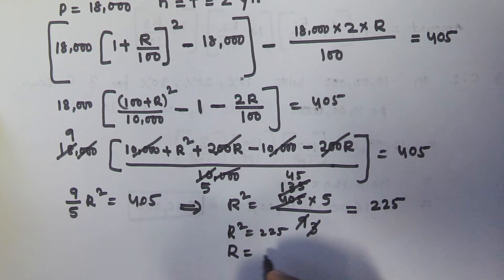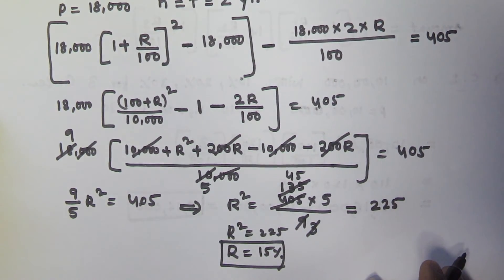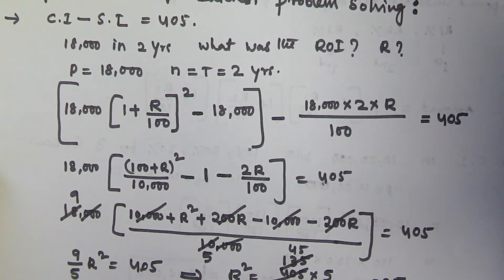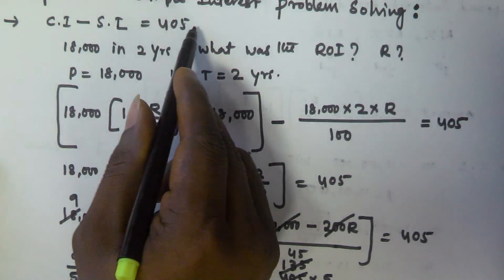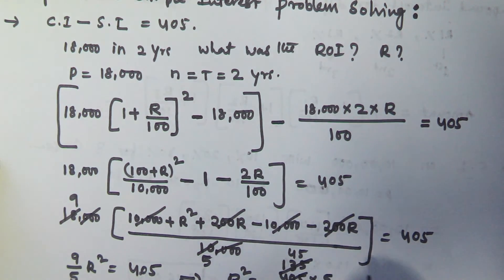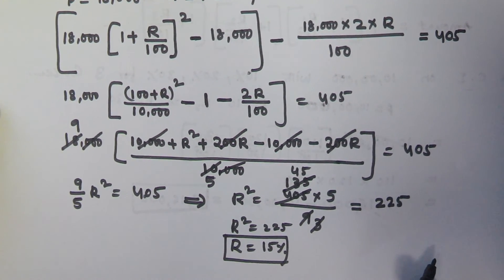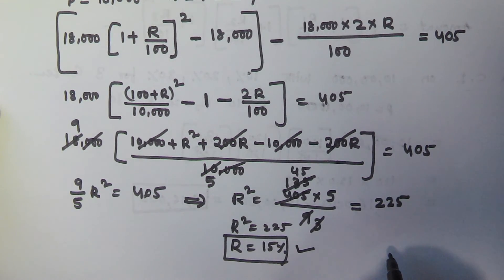Since R² = 225, R equals 15, because 15² = 225. So the rate of interest is 15%. I hope you got this. Thank you very much for watching this video. Please subscribe to my channel and if you have any doubts, please leave a comment.